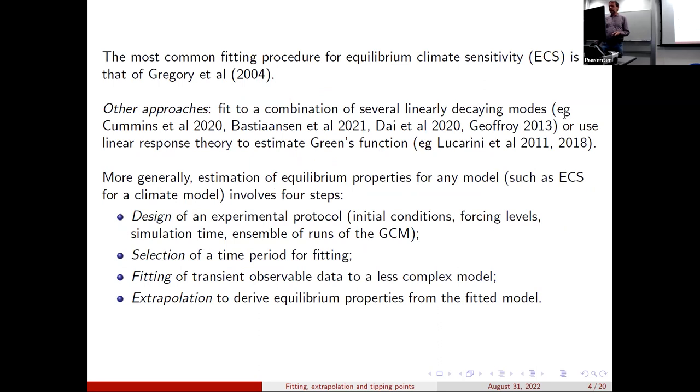If you are computing equilibrium climate sensitivity, then the go-to method I understand these days is that of Gregory. There are other approaches. The Gregory method is basically doing a linear interpolation. There are other approaches to look at multiple decaying modes with different timescales or to use linear response theory and try and estimate the Green's function. But more generally, if you want to estimate equilibrium properties for a nonlinear model, such as trying to estimate the climate sensitivity for a climate model, there are four steps you need to go through.